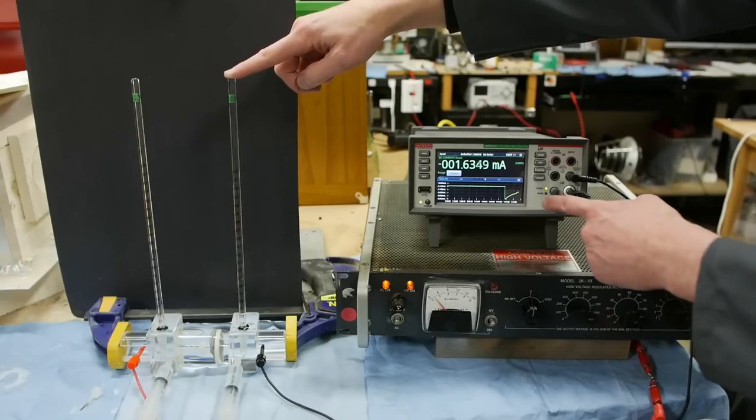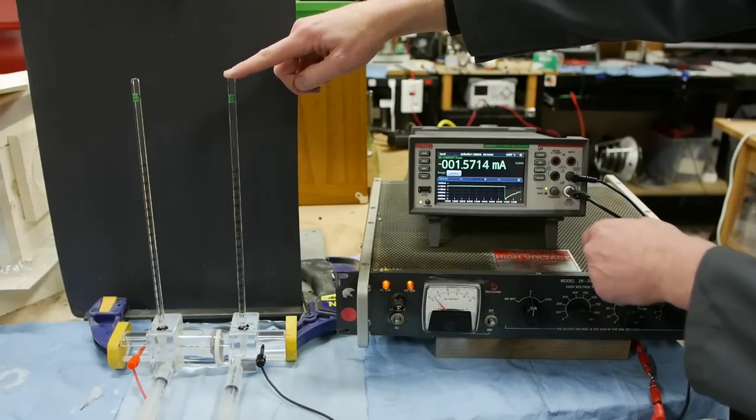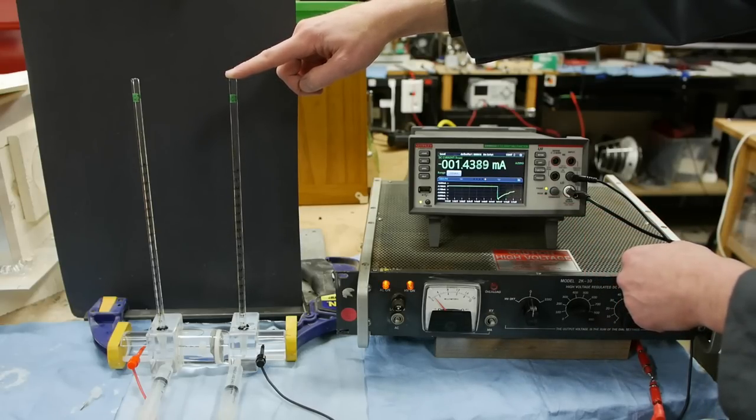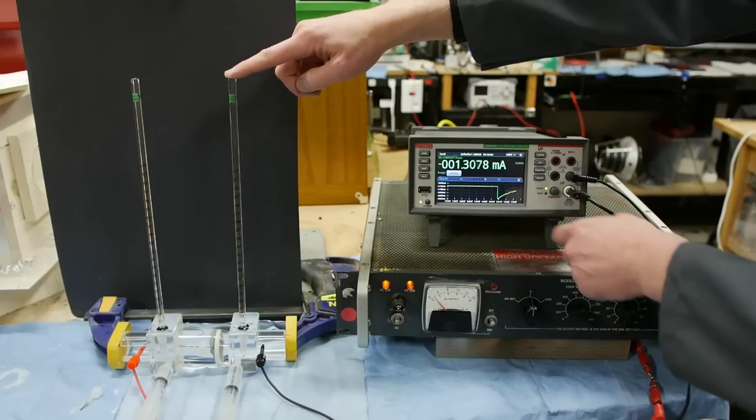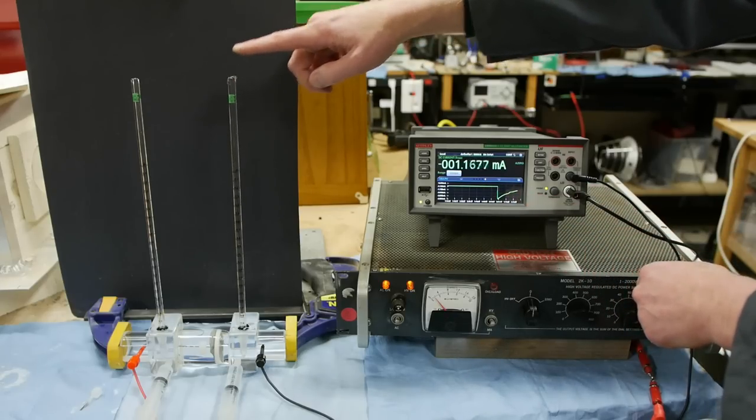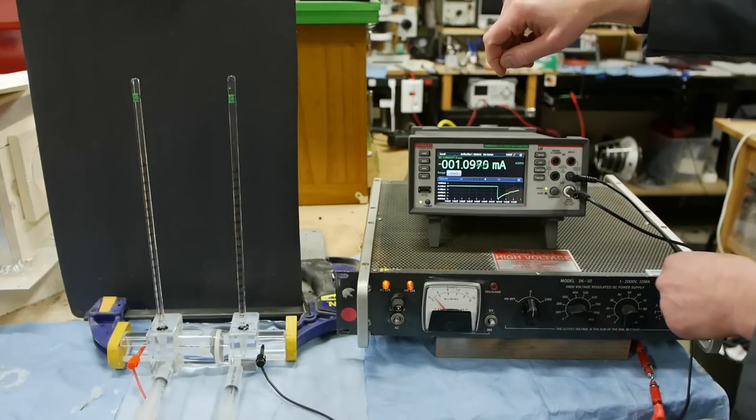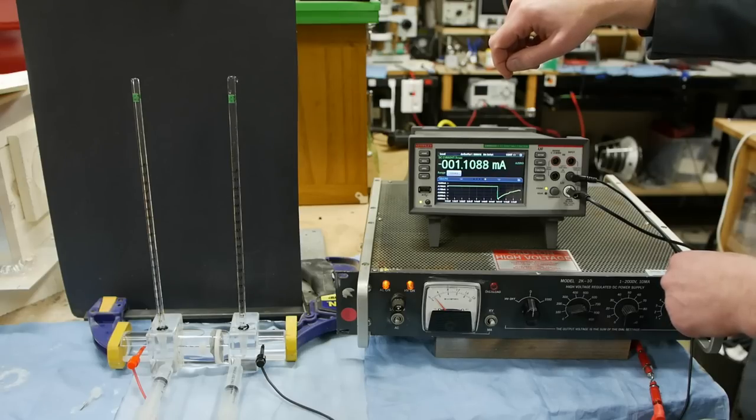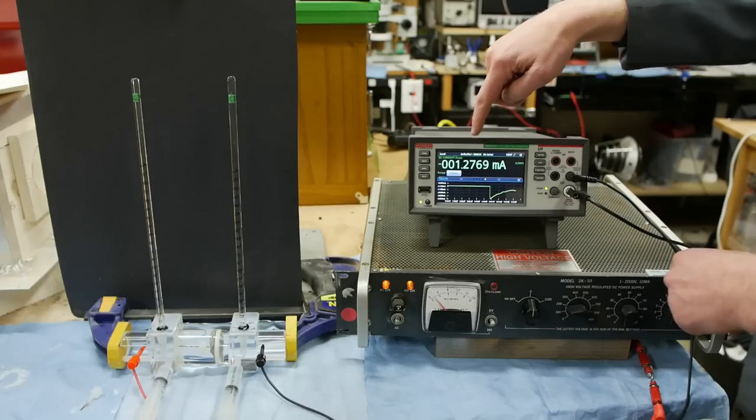Now something interesting happens if I put my finger on the end of it. Watch what happens to the current. As you can see here now we're down to 1.6, 1.5 milliamps and you can see on the graph here the history of what's happened. And if I remove my finger current starts to increase again.